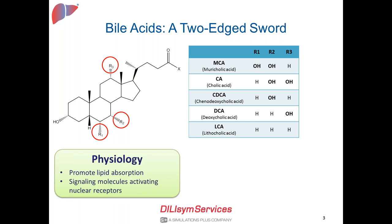These bile acids play important physiological roles. For example, they promote lipid absorption from the intestinal lumen. Recently, their role as signaling molecules activating nuclear receptors has been widely investigated and reported. We now know these bile acids play important roles as signaling molecules maintaining their own homeostasis as well as lipid and glucose metabolism.